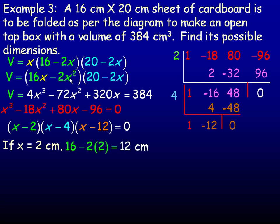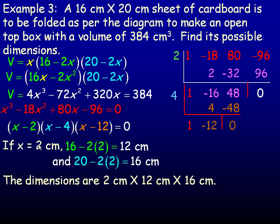And so putting 2 here, 16 minus 2 times 2 is 12. And putting 2 here as well, 20 minus 2 times 2 is 16. So possible dimensions are it could be a 2 by 12 by 16 rectangular prism, which 2 times 12 times 16 is 384.